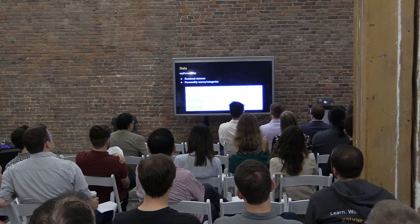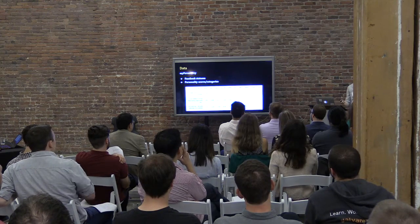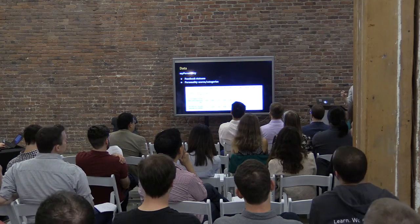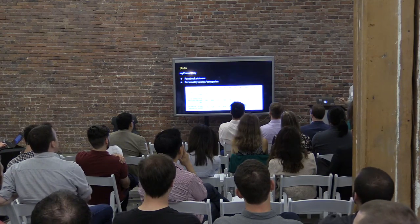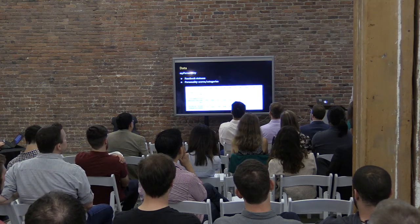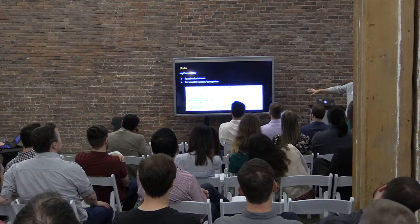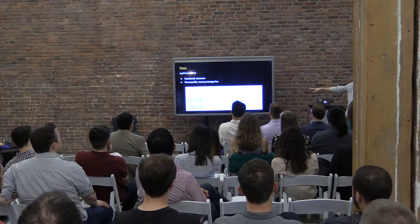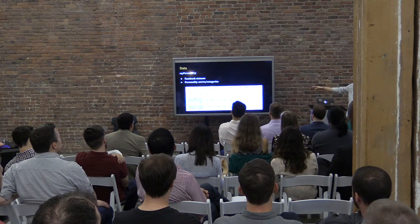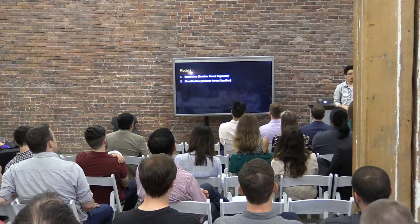For the data, I used a website called My Personality. My Personality was basically a Facebook app that recreated the Big Five personality test, which allowed them to collect personality data and also Facebook data — things like Facebook statuses, network size, and centrality. Here are a few sample rows: Facebook statuses on the left, and personality scores and personality categories for each trait on the right. The category is binary — like, are you an extrovert or not?